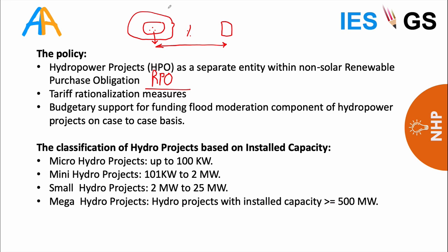The RPO mechanism encourages renewable energy producers to enter the market and set up renewable power plants, as they have a market to sell their power or RPO certificates. Additional policy measures include tariff rationalization for integrating different power sources into the main grid and budgetary support for funding flood moderation components of hydropower projects to address their environmental drawbacks.